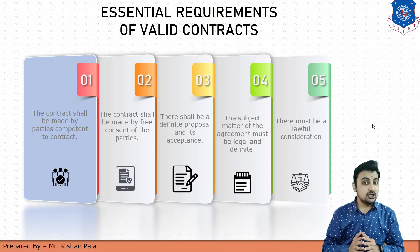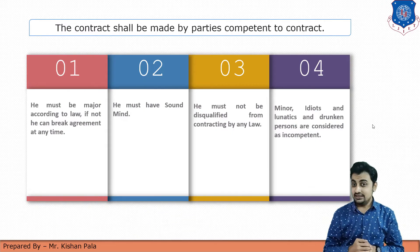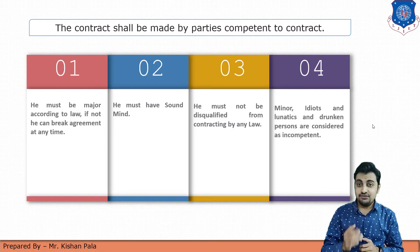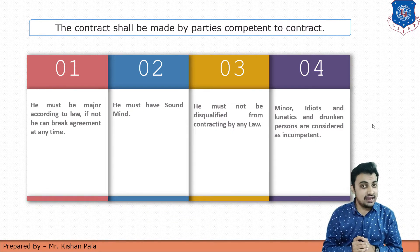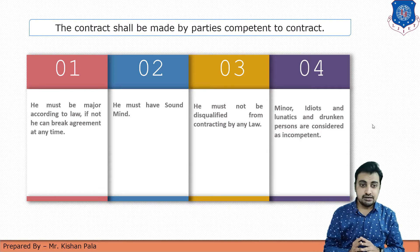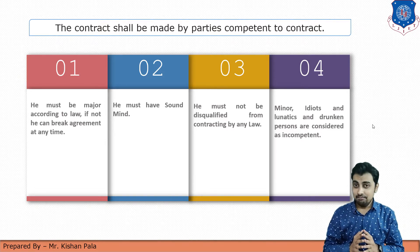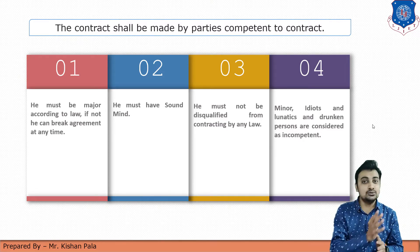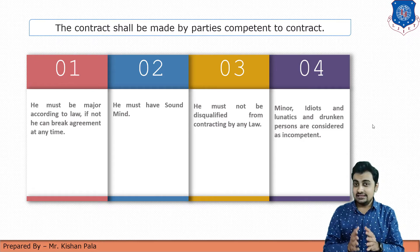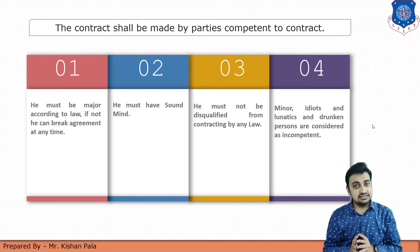The first requirement is that the contract shall be made by parties competent to the contract. There are a few considerations for fulfilling this criteria. First, he or she must be of major age — that is, age greater than 18 years, which means he or she is of major age according to law.